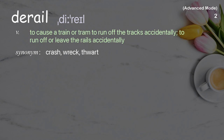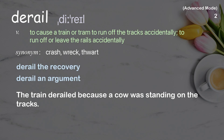Derail. To cause a train or tram to run off the tracks accidentally; to run off or lead off the rails accidentally. Examples: Derail the recovery. Derail an argument. The train derailed because a cow was standing on the tracks.